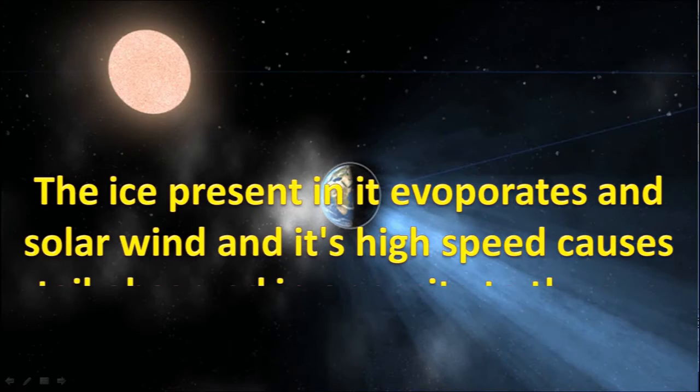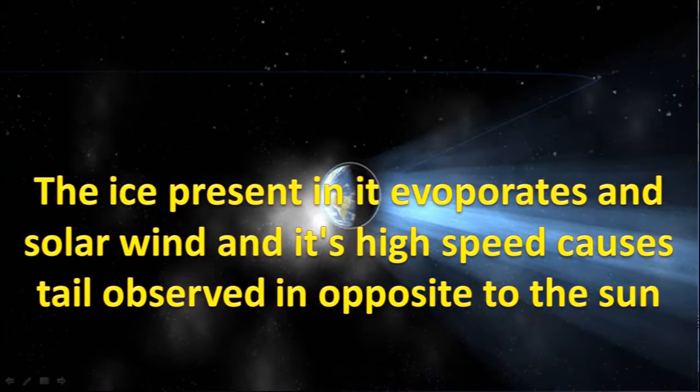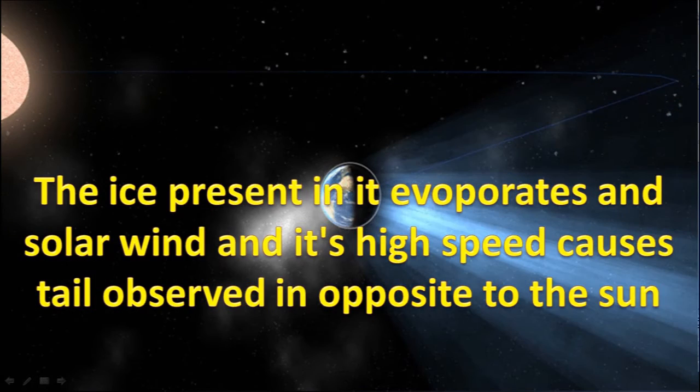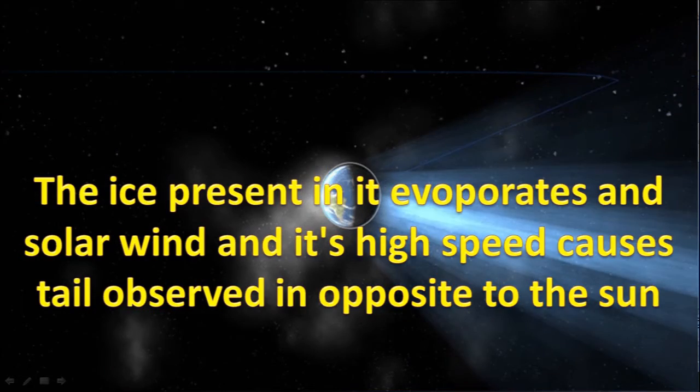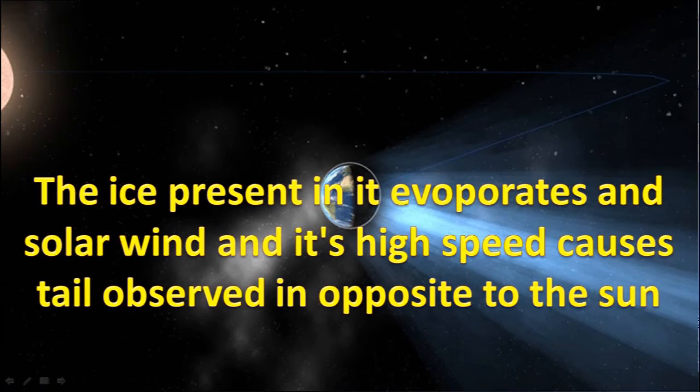The ice present in it evaporates and solar wind and its high speed causes its tail observed in opposite to the sun.